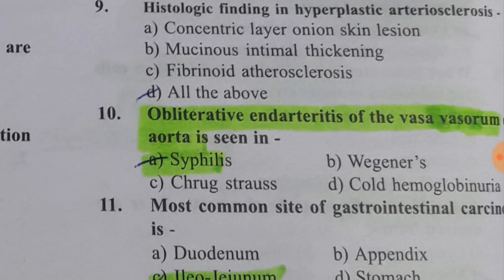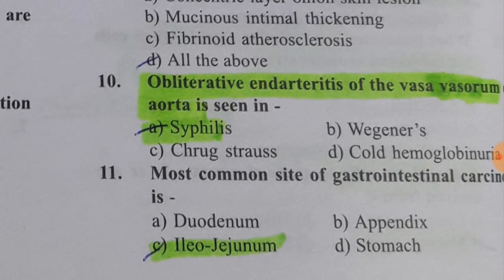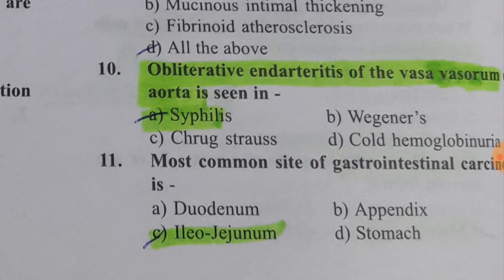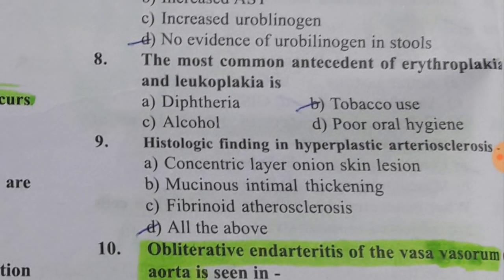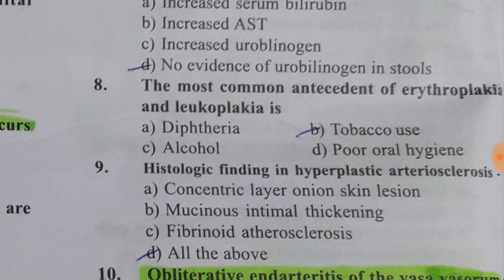Obliterative endarteritis of the vasa vasorum of the aorta is seen in syphilis — an important question. The most common site of gastrointestinal carcinoid is the ileojejunum. The histological finding in hyperplastic arteriosclerosis is a concentric layered onion-skin lesion with mucinous intimal thickening. They may give a picture of a cross-sectional histological specimen and ask you to identify it.